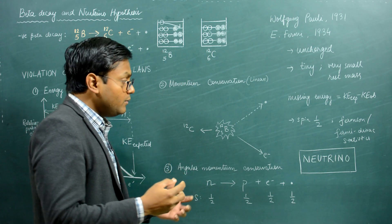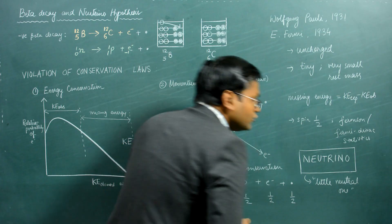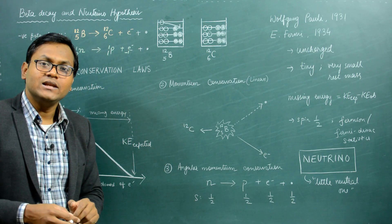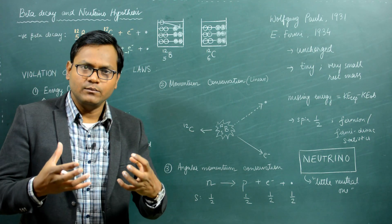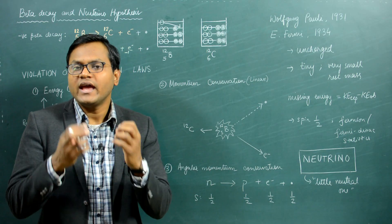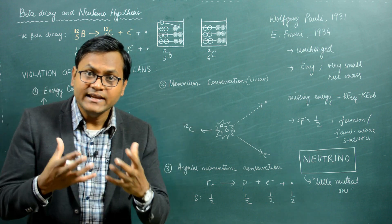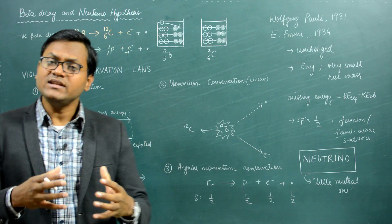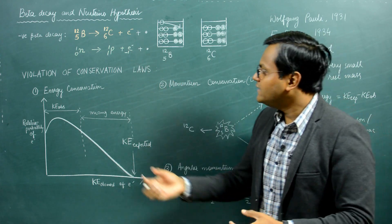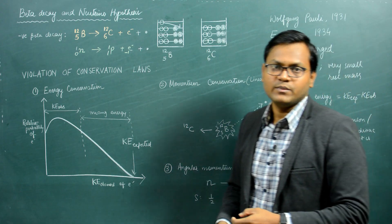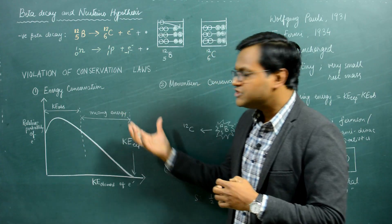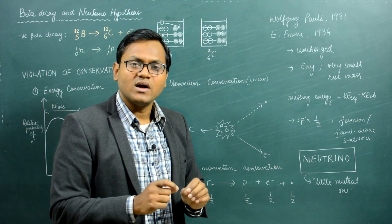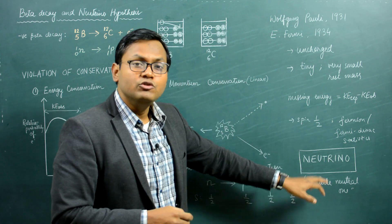It was named the neutrino by Fermi, which basically means 'little neutral one.' This particle could theoretically stop the violation of these three conservation laws and explain the experimental results. It took almost 30 years before this particle was actually experimentally discovered in the 1960s, thereby validating the theory provided by Fermi as to the existence of a new fundamental particle. This, in essence, is the neutrino hypothesis: the only way to prevent the violations of energy, linear momentum, and angular momentum conservation was to predict the existence of a third uncharged, spin-half particle with a small rest mass — the neutrino.